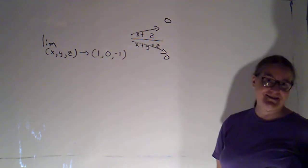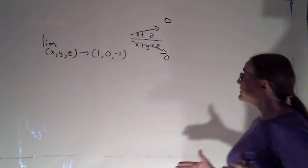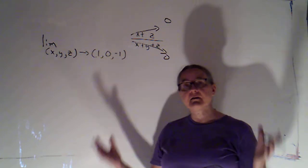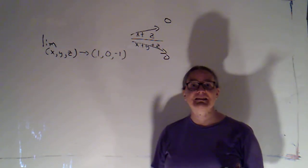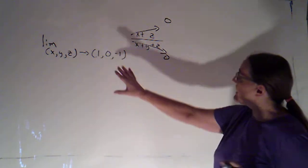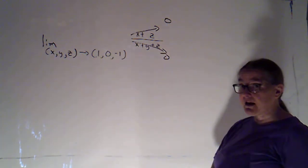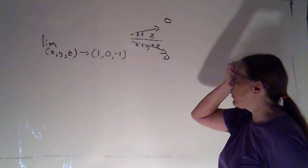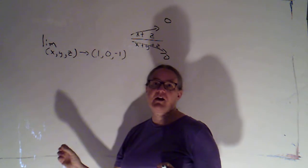So two reasons not to use that here. We're in 3-space, and we're not going to the origin. So I'm going to hope that this limit does not exist, and I'm going to try paths. And I think the simplest paths are just lines, and I think the simplest paths are lines that are parallel to the coordinate axes.